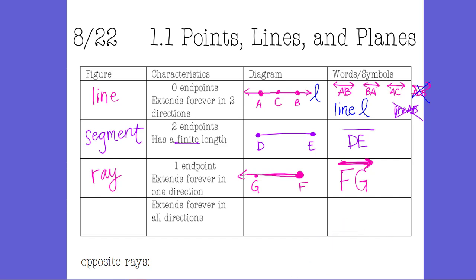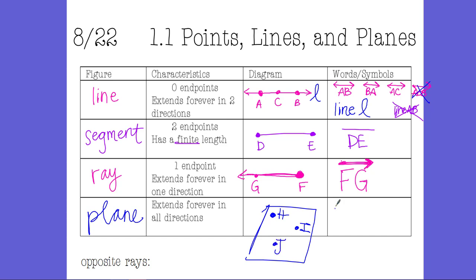The last basic figure is a plane. A plane extends forever in all directions — think of the floor of an office building extending forever. The way we name a plane is using three non-collinear points. I could name this plane HIJ, or IJH, or HJI — the order of the letters doesn't matter, but you must use three non-collinear points. We'll talk about collinear and non-collinear in a moment. Another way to name a plane is with a cursive label; if a label like cursive P is given floating on the plane, I can call this plane P.